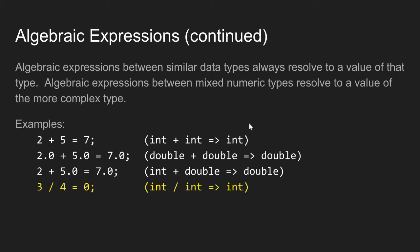When you use an algebraic operator between two similar data types, the result it produces is always that data type. So an int operating against an int will always produce an int; a double operating with a double will always produce a double. Algebraic expressions between mixed data types always give you the more complex type. So integer 2 plus double 5 gives a double result — it's the more complex type.